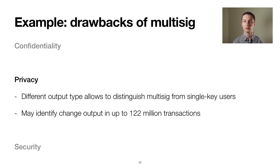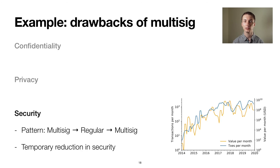Because multisig commonly uses a different script type than normal single key use, we can distinguish between the addresses of different users. If, for example, a normal user who uses a single key makes a payment to a company that uses multisignature wrapped in a script hash address, her wallet will generate two outputs: the actual spend and a change address. Because the change goes back to a normal single address output, it allows us to tell apart the spend from the change output. We found that this may allow to determine the change output in up to 122 million transactions. Finally, we observed a pattern where funds are funneled from one multisig address to another through a regular address, raising concerns about a temporary reduction in security. There are up to a few thousand transactions each month that exhibit this pattern, transferring bitcoins worth millions of US dollars.